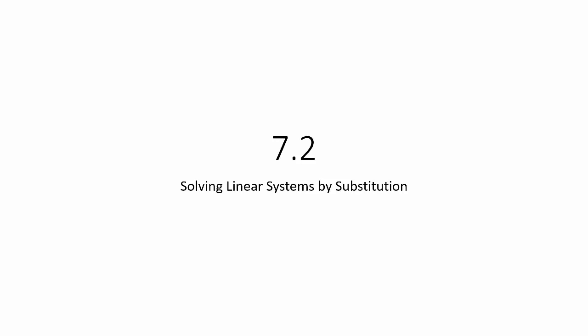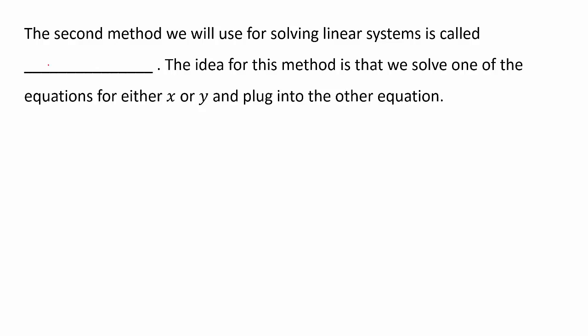In section 7.2 we talk about solving linear systems by substitution. This is typically the second method we learn — graphing comes first, then substitution. The idea is that when we substitute something in the real world, we're taking something equal or almost equal and putting it in place of something else. A substitute teacher is considered equivalent to the regular teacher, and in a recipe you might substitute oil for butter, saying those are close enough that everything should work out.